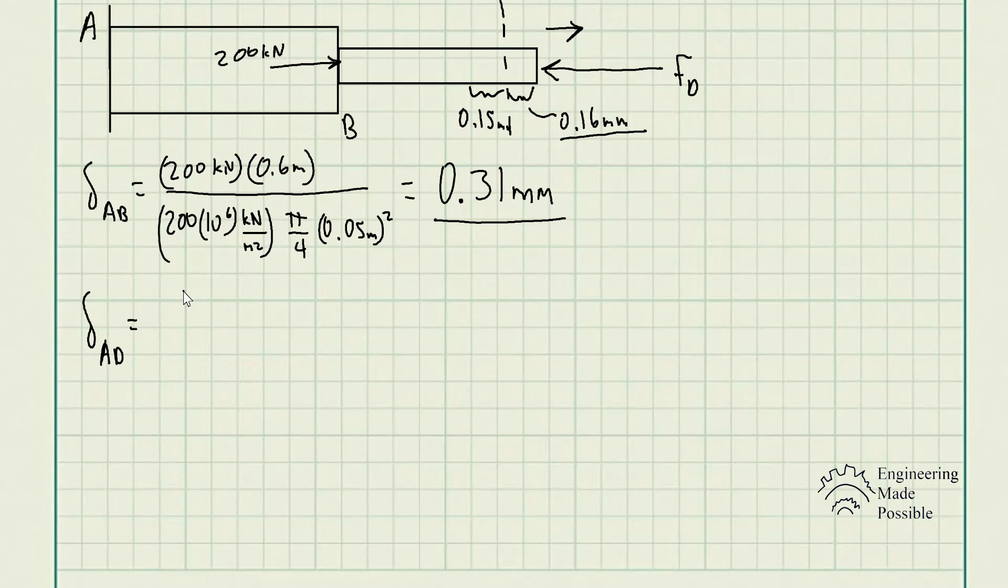We have the deformation of the first segment of A to B plus that deformation from point B to D. And we know the total deformation of the entire rod assembly is equal to 0.16 millimeters, which is what we previously solved for. Let's plug in the equation for the deformations of each of these and solve for the unknown.